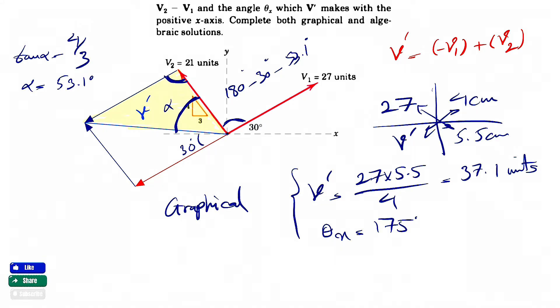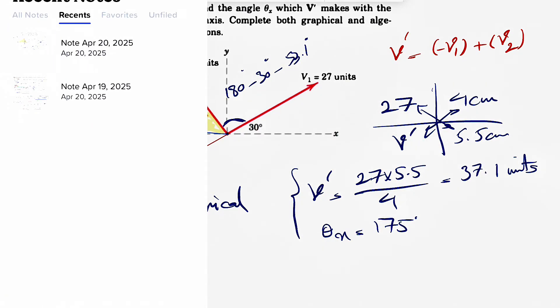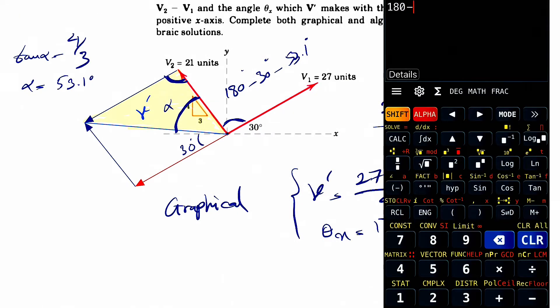So that one is going to be 180 minus 83.1. So 180 minus 83.1 is going to be 96.9. So this angle here is 96.9, which is what we had in here.